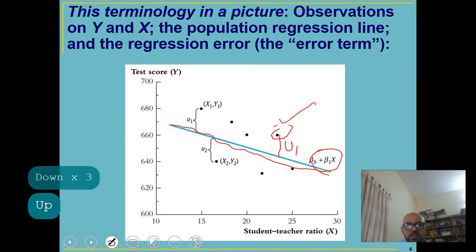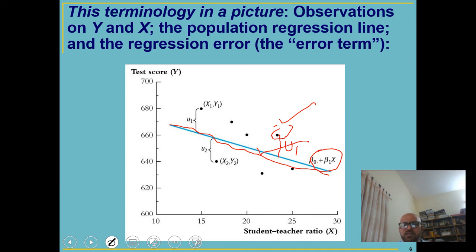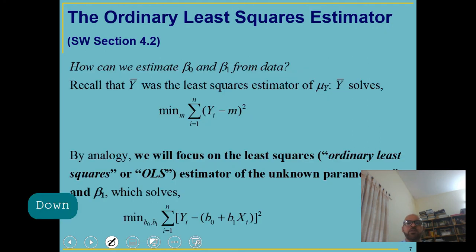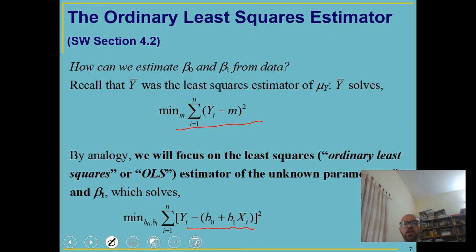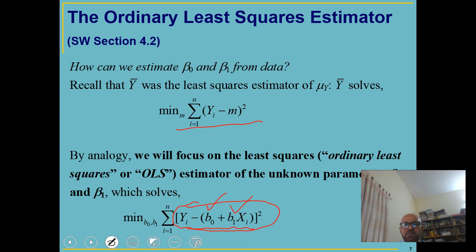We try to fit this line — the blue line — in such a way that the sum of squares of errors is minimized. Since errors are unobserved, we always work with residuals from the sample. In ordinary least squares, we try to minimize the sum of squares of residuals, just as we minimize sum of squares from the mean. We pick those values of beta 0 and beta 1 which make this sum of squares minimum.